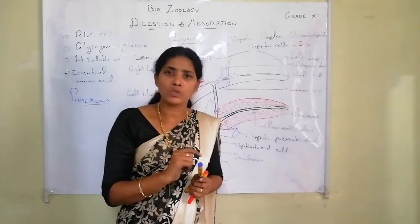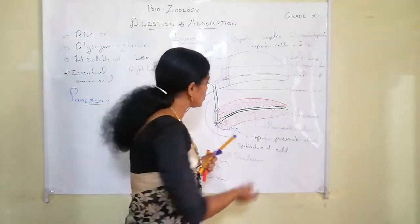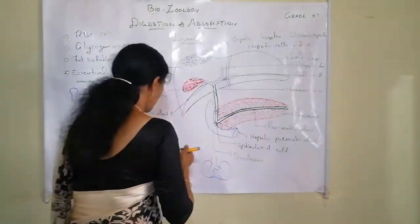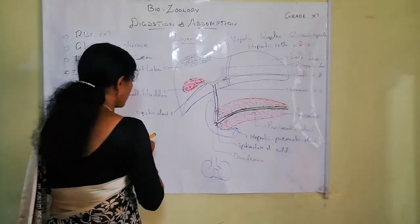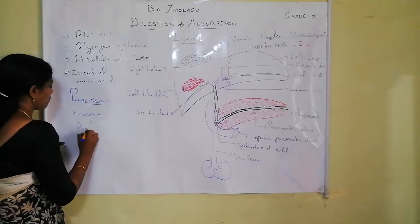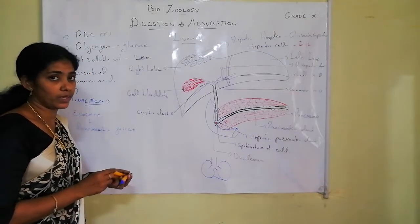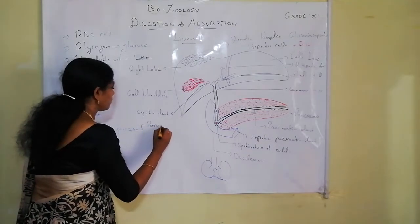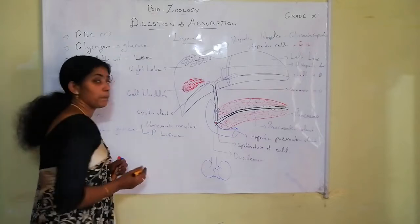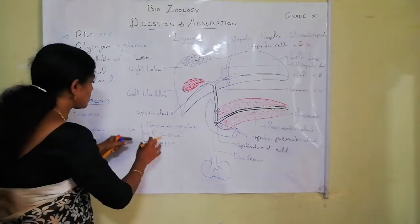The exocrine part of the pancreas produces pancreatic juice, which contains pancreatic amylase, pancreatic lipase, and trypsin. These enzymes are present in the pancreatic juice.